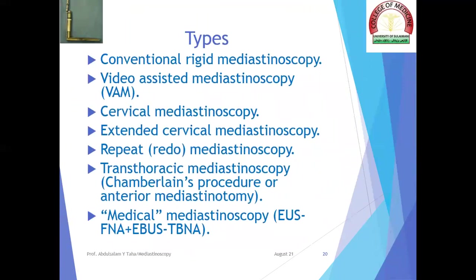The types of mediastinoscopy include: conventional rigid mediastinoscopy without a camera, video-assisted mediastinoscopy when a video camera is added, cervical mediastinoscopy and extended cervical mediastinoscopy, repeat or redo mediastinoscopy, the transthoracic mediastinoscopy or Chamberlain procedure (anterior mediastinotomy), and medical mediastinoscopy — which is a combination of esophageal ultrasonographic FNA and endobronchial ultrasonographic transbronchial needle aspiration.